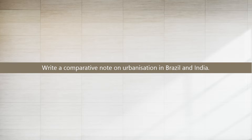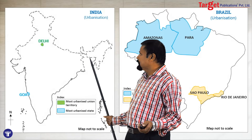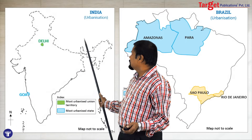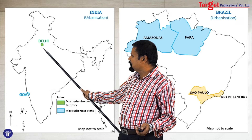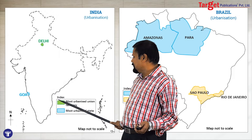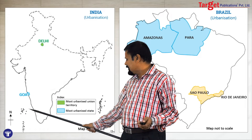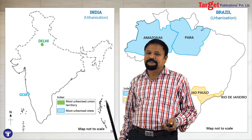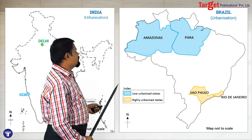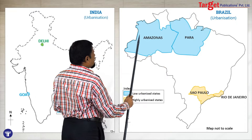If the question says 'write a comparative note on urbanization in India and Brazil,' in that case you have to draw both maps. Draw India and show that Delhi is the most urbanized union territory, then Goa is the most urbanized state. Give the index again with heading, sub-heading, direction, and map not to scale. The same way you can show Brazil's urbanization also — title, subtitle.